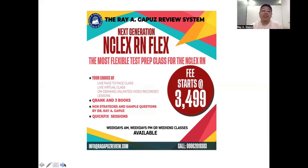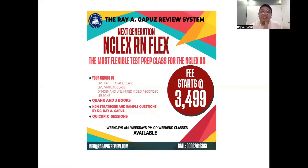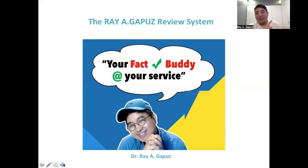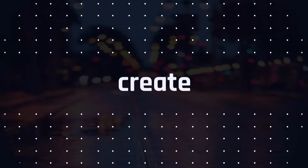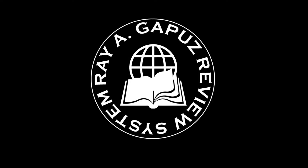The fee starts at $34.99. Give us a call or send us an email at info@ragapsreview.com, or call 0906-201-9383. This has been your mentor, your fact-check buddy Ray Gap at your service. Call me anytime before your test. Next Gen passer — see you in my class!